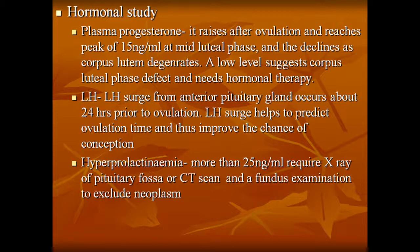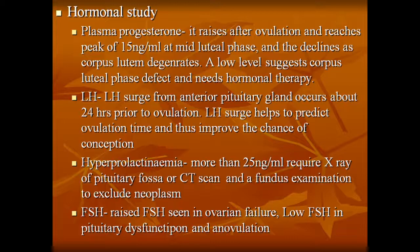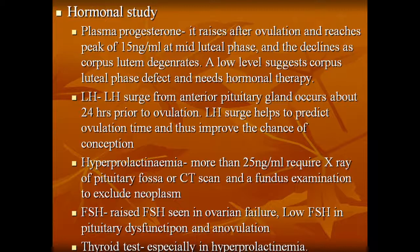Hyperprolactinemia — more than 25 nanogram per ml — requires x-ray of pituitary fossa or CT scan and fundus examination to exclude neoplasm. Raised FSH suggests ovarian failure; low FSH in pituitary dysfunction and anovulation. Thyroid test — especially in hyperprolactinemia.